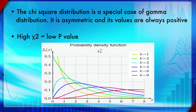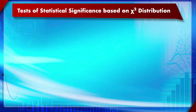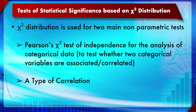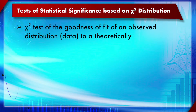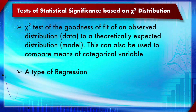If the chi-square value is very high, the p-value is going to be very low. This distribution is very important because we use it for two important statistical significance tests. One is called Pearson's chi-square test of independence of two categorical variables. The other is the chi-square test of goodness of fit of an observed distribution to a theoretically expected distribution, also known as a model.